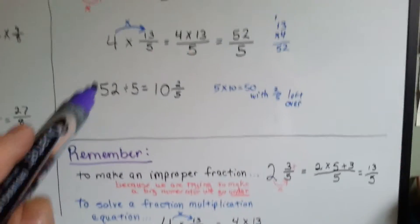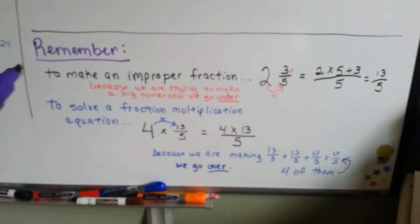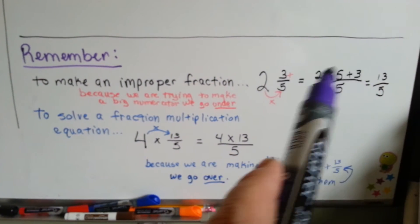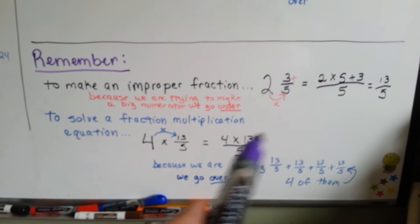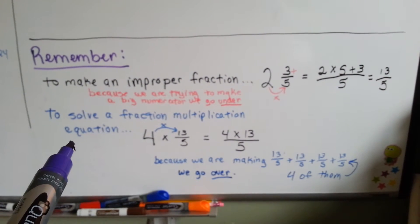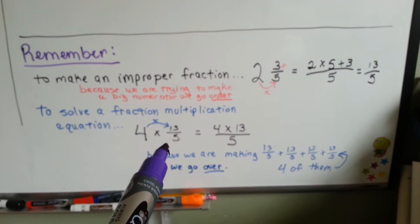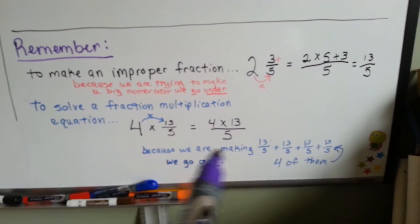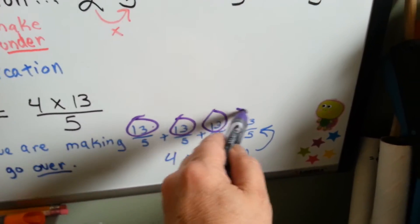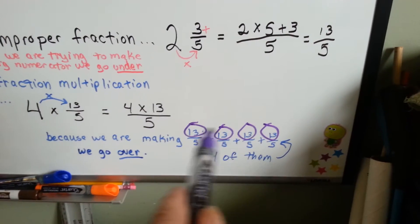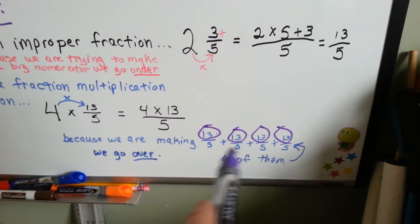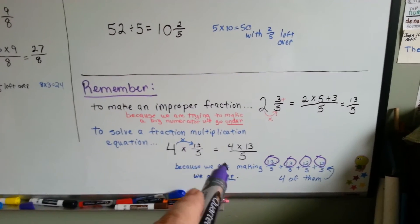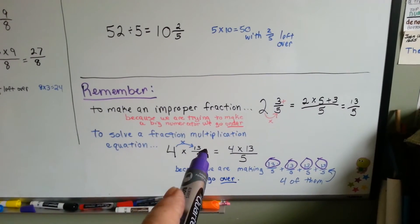Now, remember — the under-over thing can get confusing. To make an improper fraction, because we're trying to make a big numerator, we go under: multiply the denominator and add the numerator. But to solve a fraction through multiplication, we go over: multiply the numerator times the whole number, then put it over the denominator. Multiply denominator, add numerator — then multiply numerator.